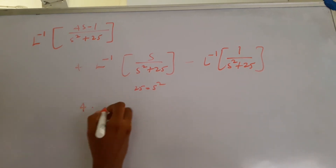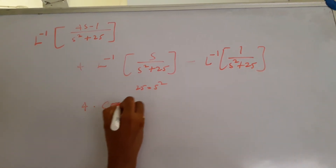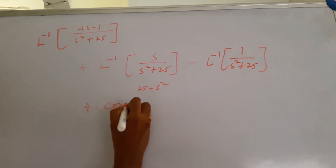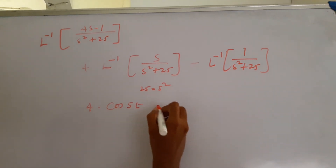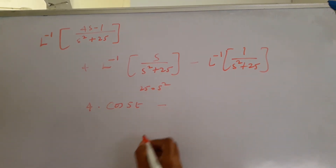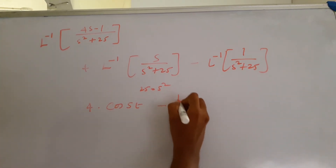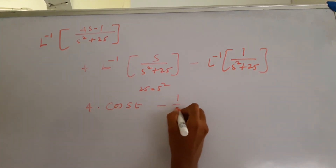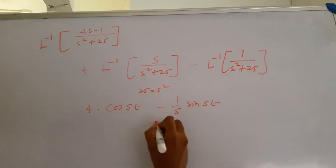So you get this as cos(5t). And this should be 1 over 5 times sin(5t).